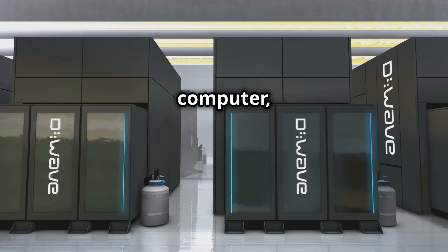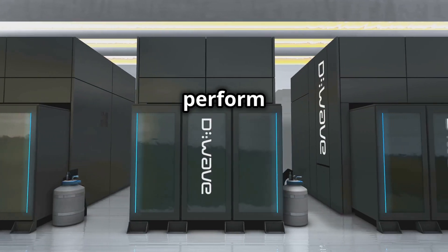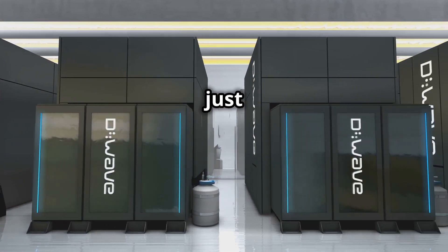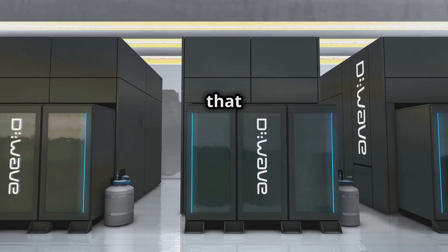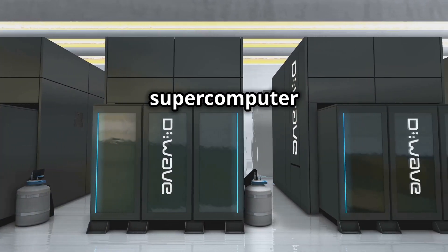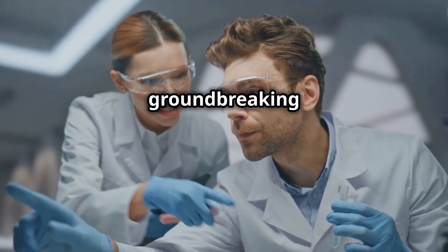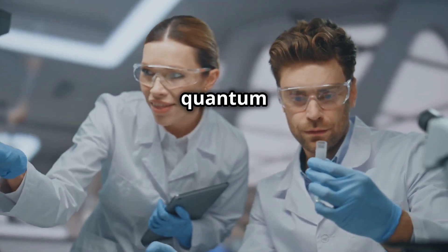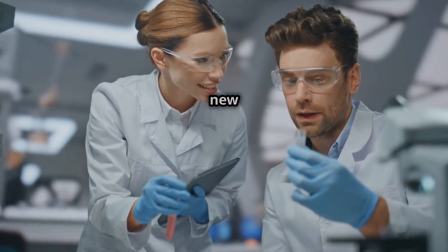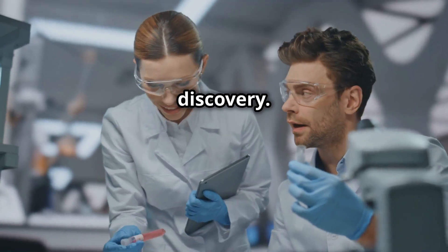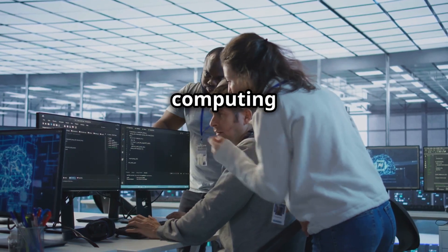Google's quantum computer, named Sycamore, was able to perform a complex calculation in just 200 seconds—a feat that would have taken the world's fastest supercomputer an estimated 10,000 years to complete. This groundbreaking experiment proved the potential of quantum computing and paved the way for a new era of scientific discovery.